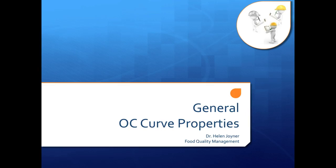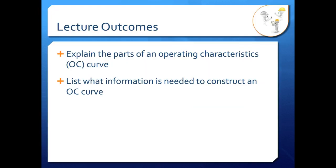Operating characteristic or OC curves are a key part of a sampling plan. They help you understand if you take a sample, how likely are you to accept that sample. So let's take a look at general OC curve properties and see what these particular curves are telling you. In this video, we'll talk about the different parts of an OC curve and then what information you need to put together an OC curve. Actually putting together that curve is a different video.